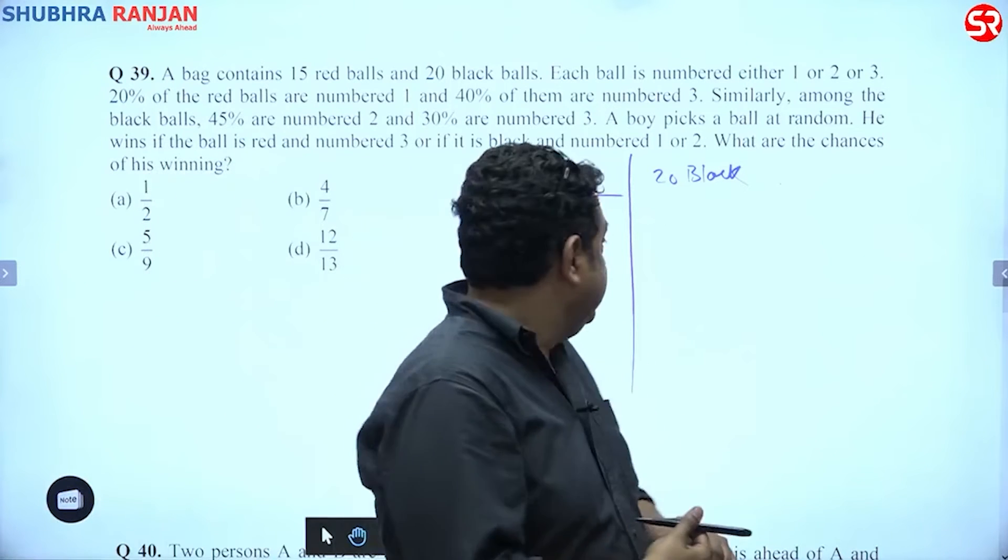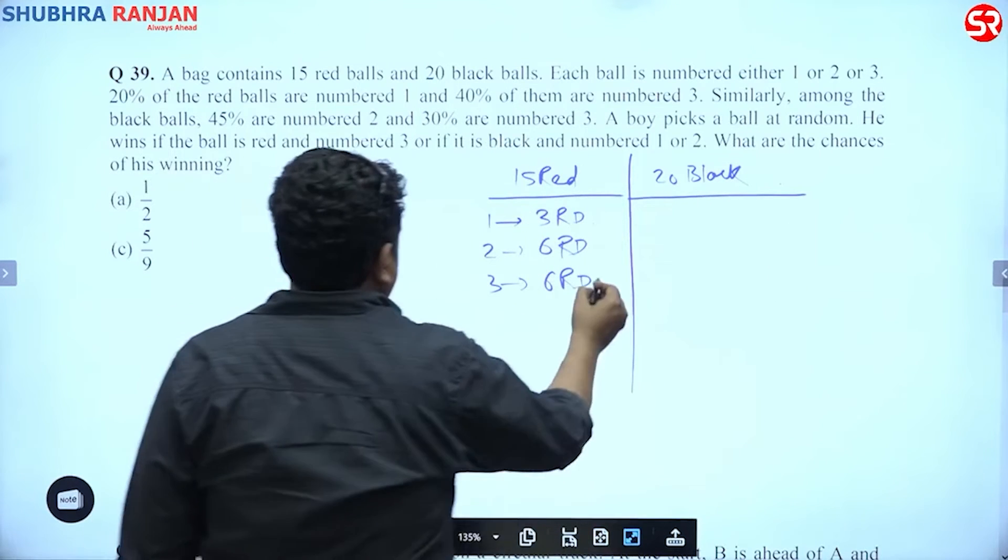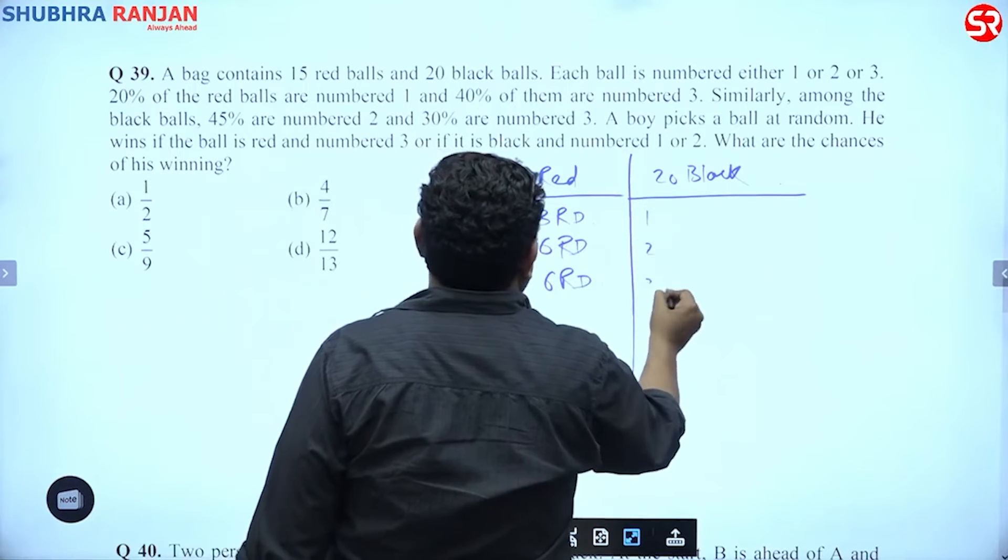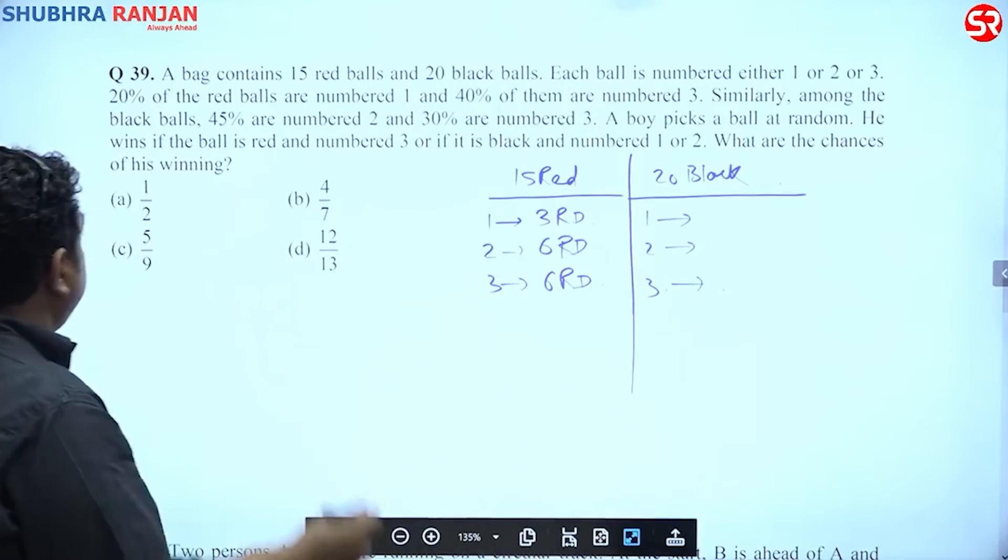And then he says 20 black balls. Now let us talk about 20 black balls: number 1, number 2, number 3. So he says similarly, among the black balls, 45% are number 2.